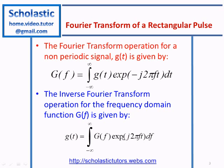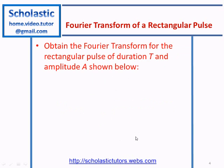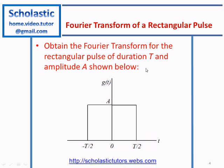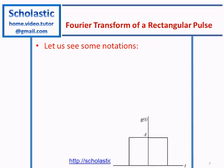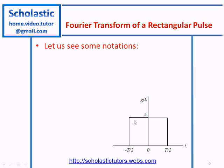Now let's try an example: obtain the Fourier transform for the rectangular pulse of duration T and amplitude capital A shown below. The duration T starts from minus T/2 to plus T/2 and the amplitude is capital A.